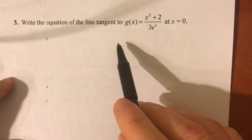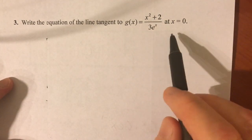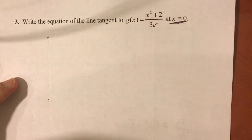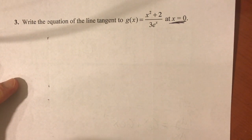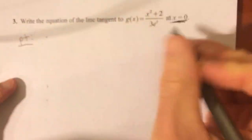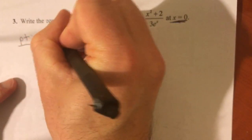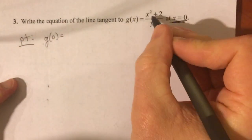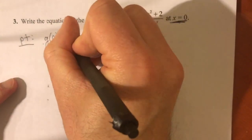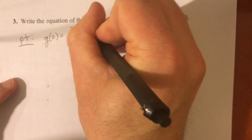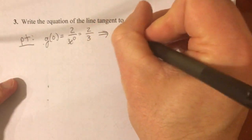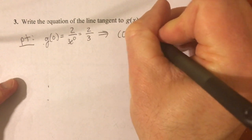Okay, so number 3. Write the equation of the line tangent to this function at x equals 0. Okay, classic tangent line problem. Two things to write the equation of a line. You need the point and the slope. I need the y-coordinate of that point of tangency. So I'm going to plug 0 into this, right? That's where you get a y-value from. So g of 0 is 0 plus 2, which is 2, over 3 e to the 0. And, of course, 3 e to the 0. E to the 0 is just 1. So you have 2 thirds. So your point is 0, 2 thirds. That's your point of tangency.